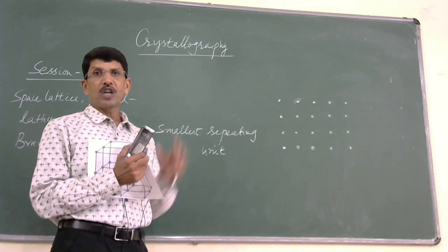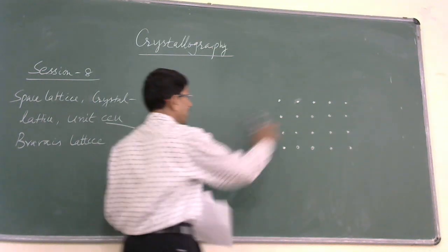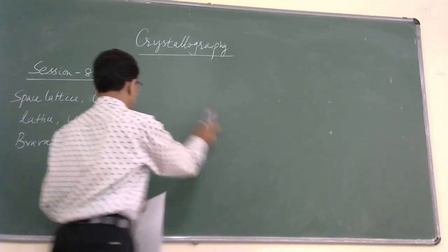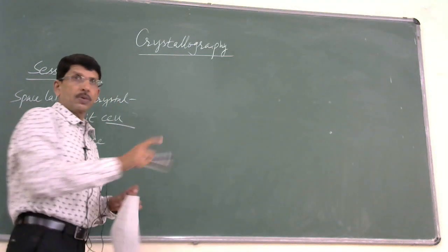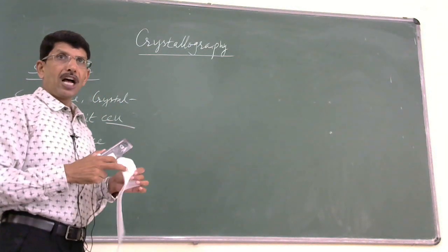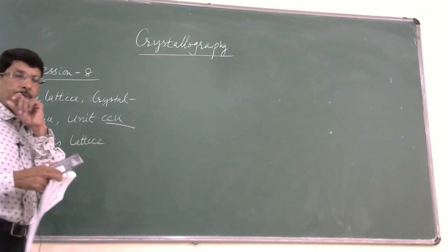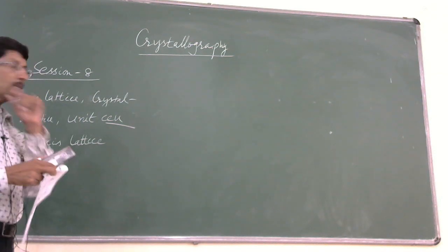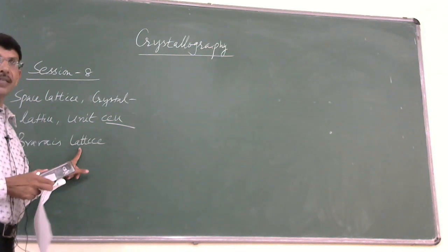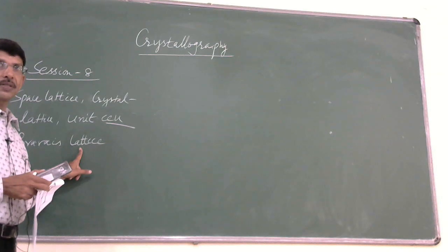The three-dimensional arrangement of particles having definite geometry is called a crystal lattice.